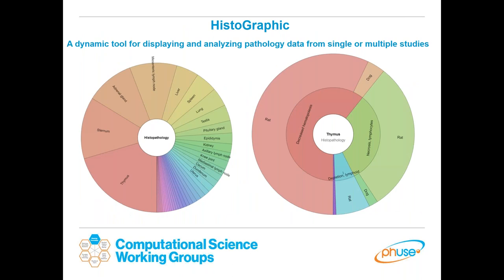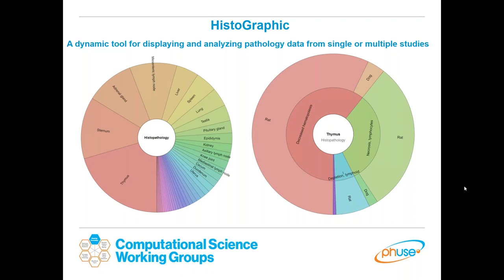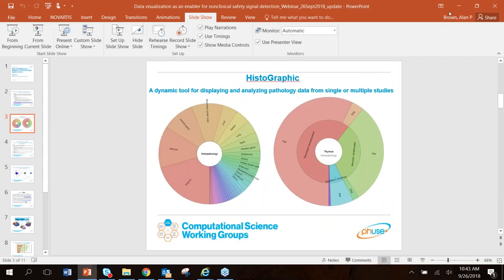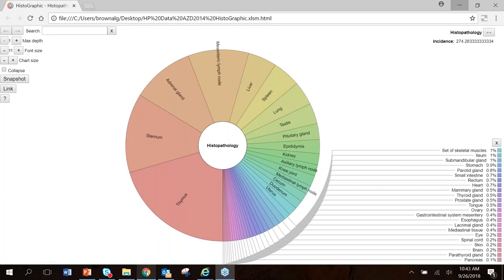During the course of this three-year project, we were very productive. We had three posters presented at FDA-FUSE computational science symposiums, published a paper in Regulatory Toxicology and Pharmacology — a cross-industry survey of graphical tools — and more recently members of our project team who are part of the Society of Toxicologic Pathology published a paper on data visualization for pathology and clinical pathology. I'd like to introduce next a dynamic tool for displaying and analyzing pathology data from single or multiple studies, which we have termed Histographic. I'm going to give a live demo of the tool.